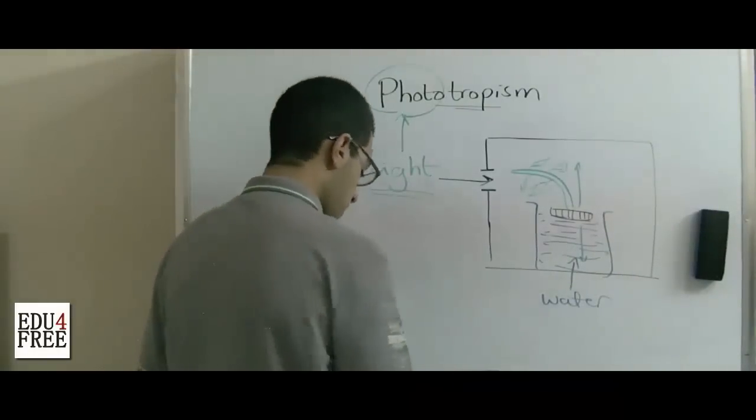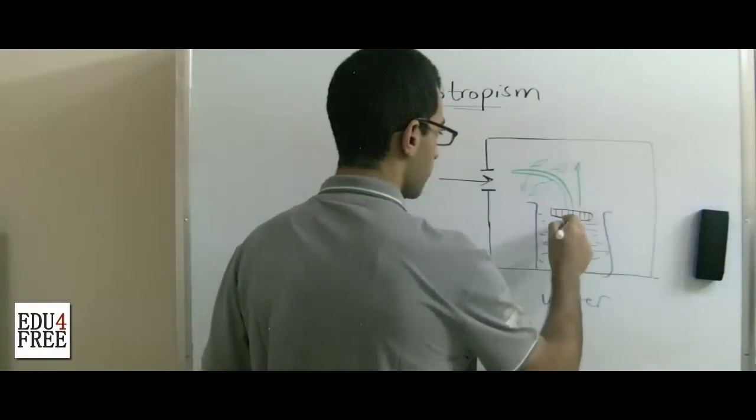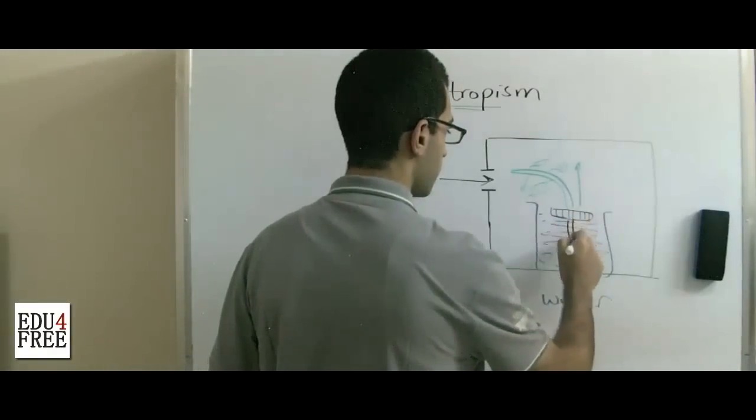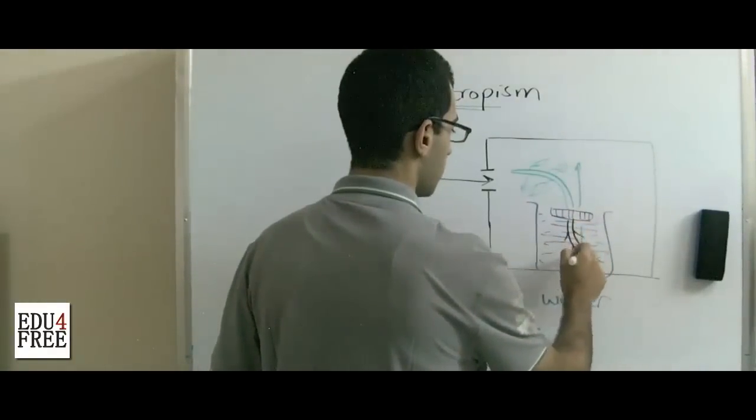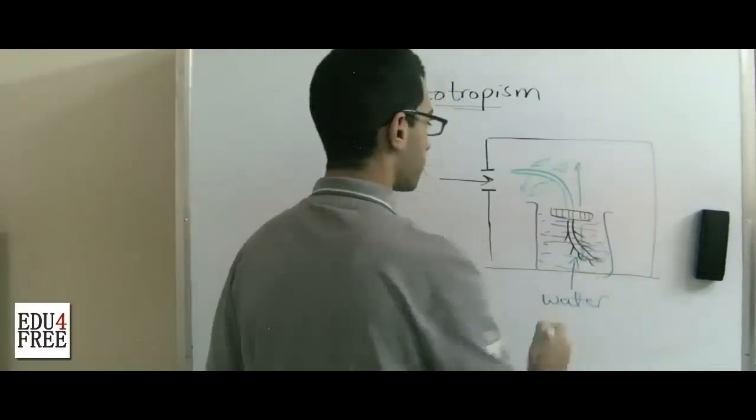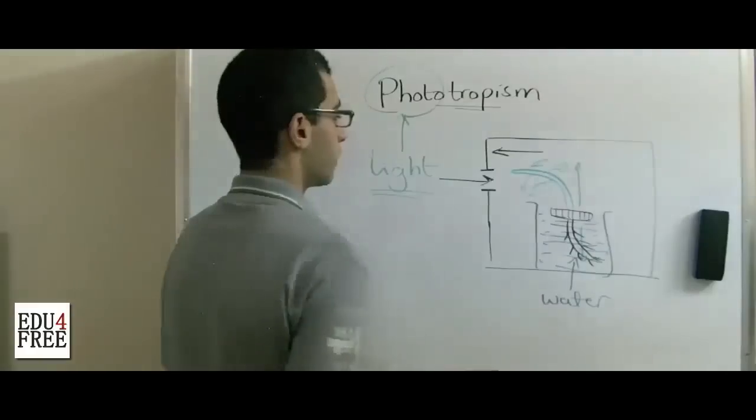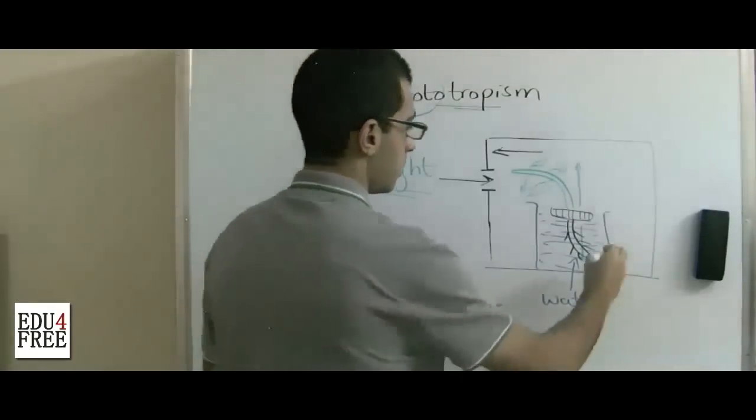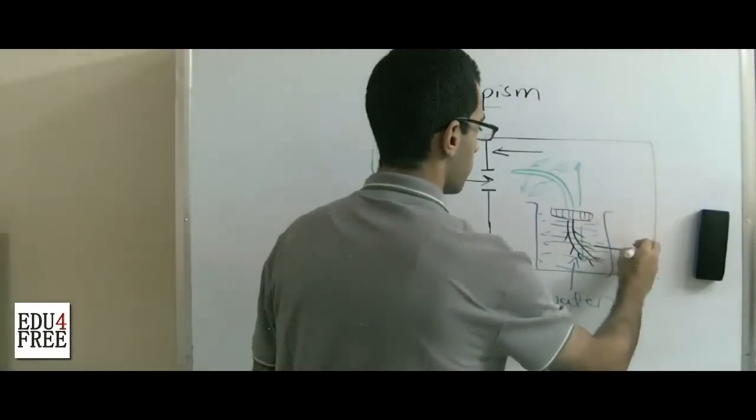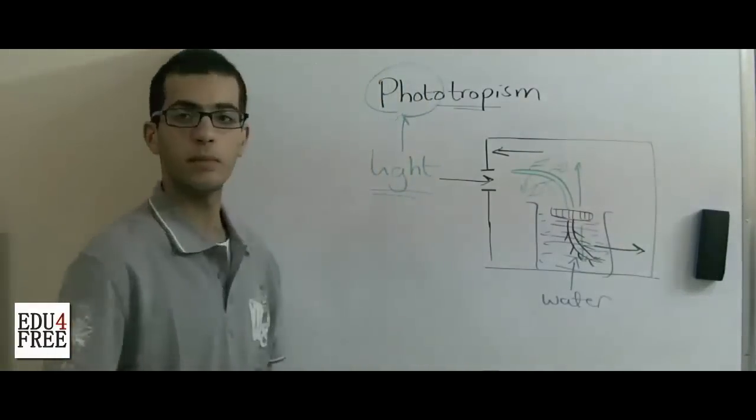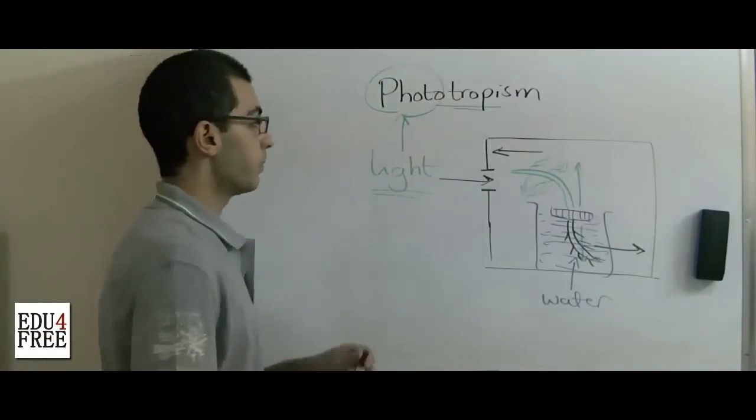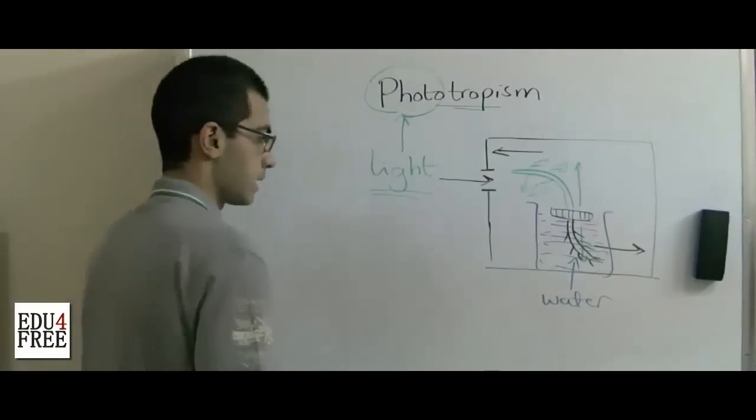The opposite occurs in the roots. We will notice that the root grows in the other direction. So the stem grows in the direction of the bright part of the box, while the root grows in the direction of the dark part of the box. So what's the reason for this?